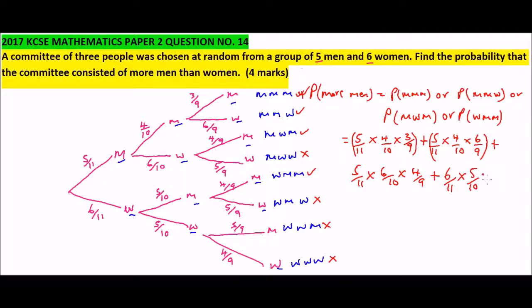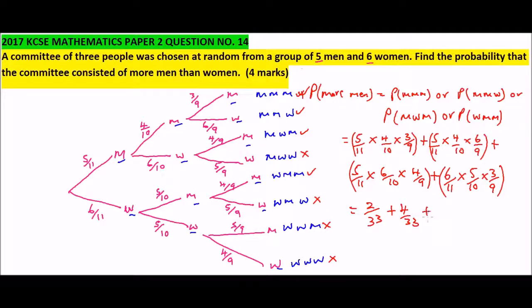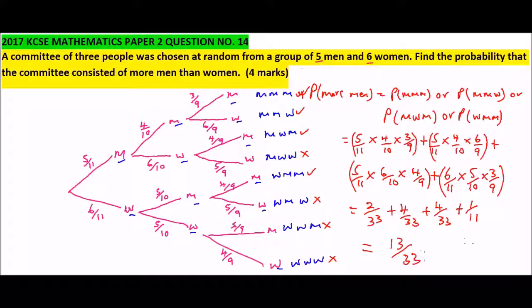Those are the three probability expressions. Using a calculator, you compute each term. The first gives 2/33, the second gives 4/33, the last gives 4/33. Also there is a branch for woman-man-man giving 1/11. Adding all these probabilities, you get 13/33. That is the probability that the committee will have more men than women.